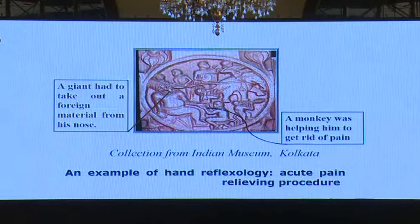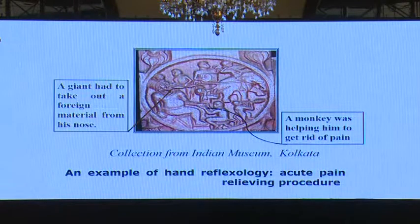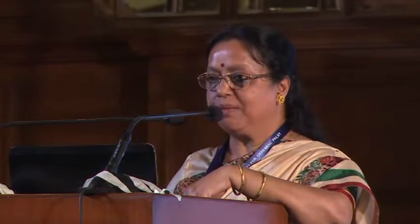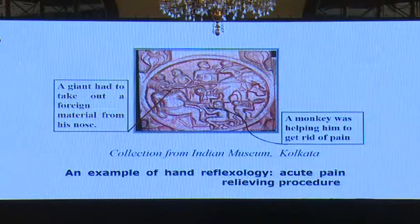This is a very good picture from Kolkata. The king got a thorn in the nose, and an elephant came to take the thorn out. In order to avoid the pain of this process, a monkey gave therapy to relieve the pain. This is a vivid example of hand reflexology. There are many sculptures and paintings — just a few are shown here.